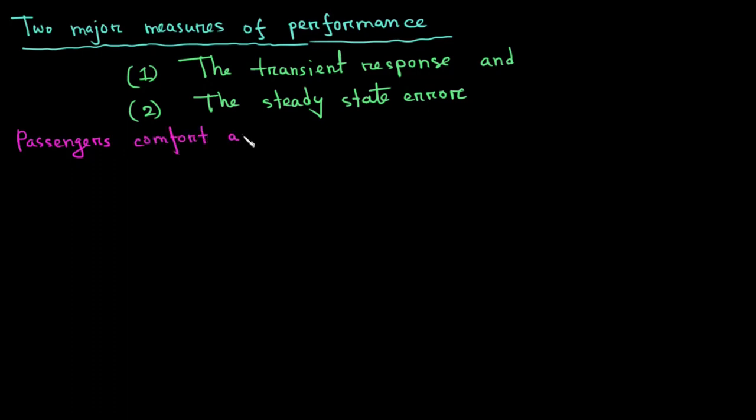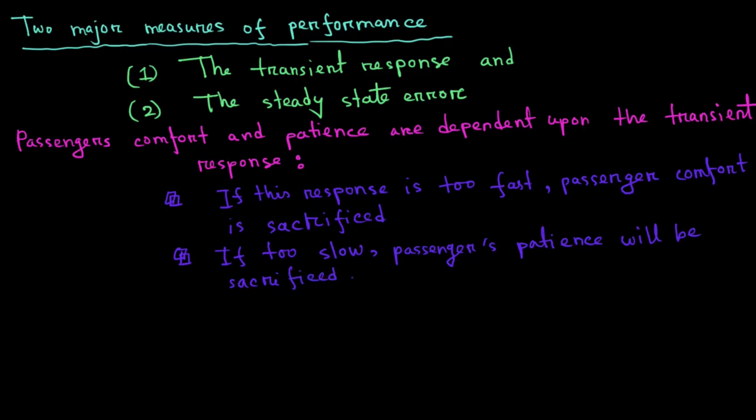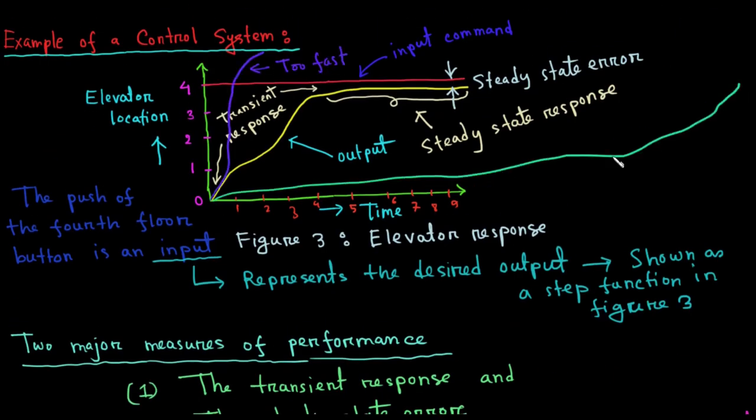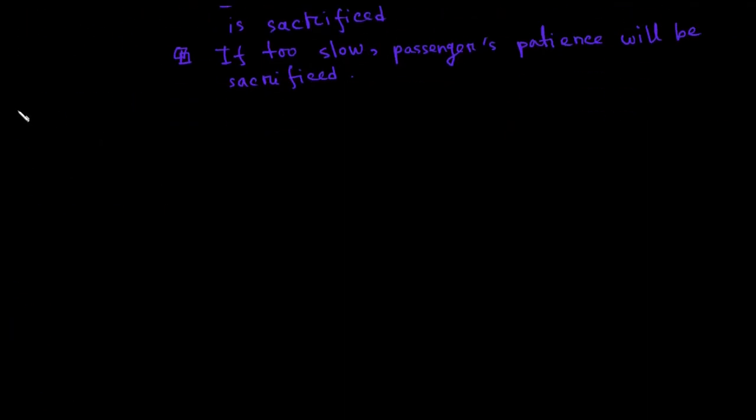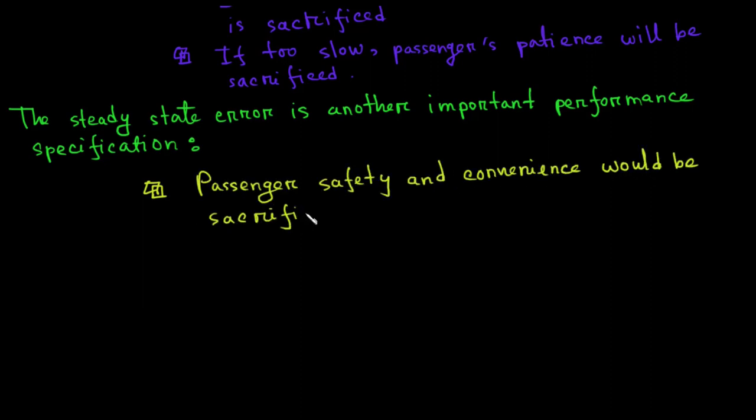In our example, passengers comfort and passengers patience are dependent upon the transient response. If this response is too fast, passengers comfort is sacrificed. If too slow, passengers patience is sacrificed. The steady state error is another important performance specification since passengers safety and convenience would be sacrificed if the elevator did not properly level.